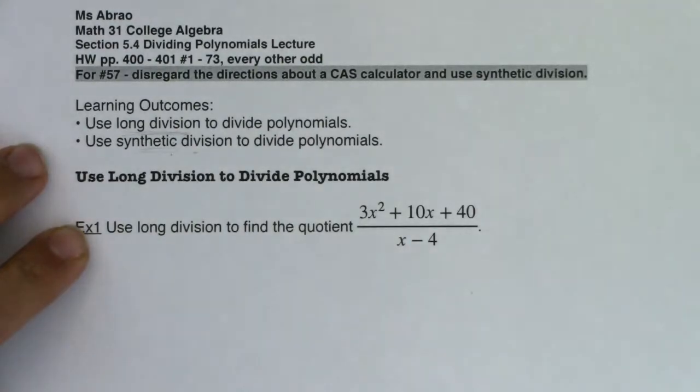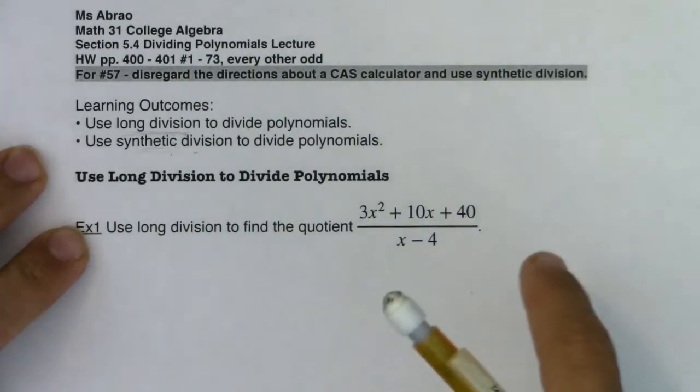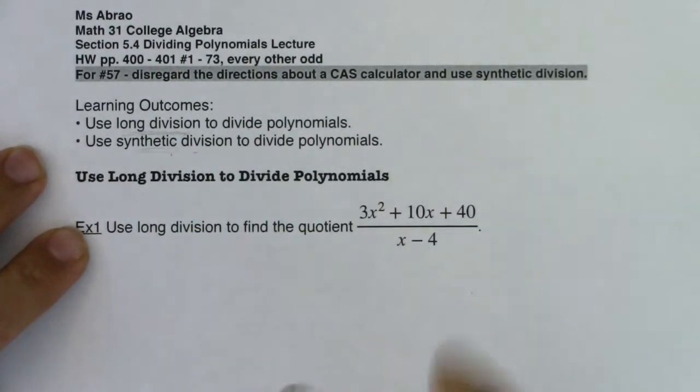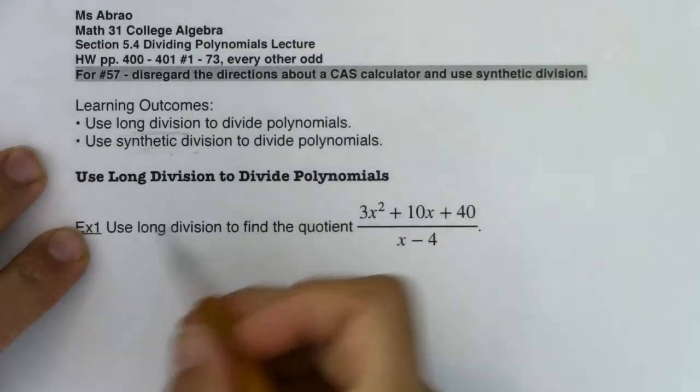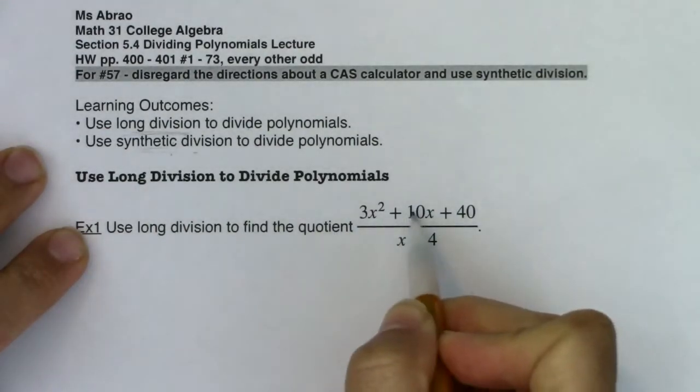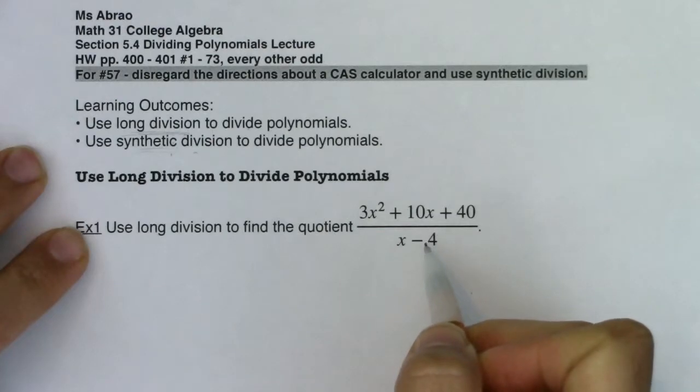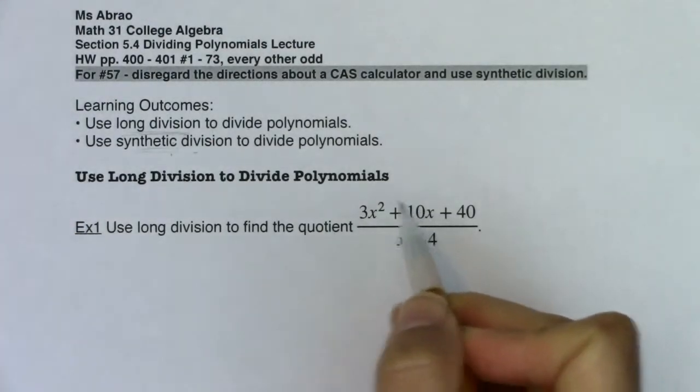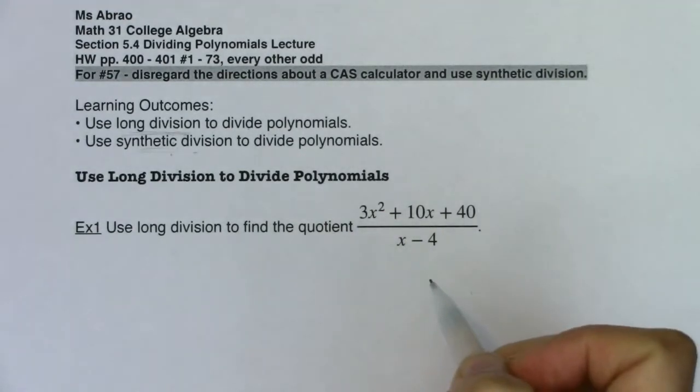We'll do a couple of examples with long division. And then we're going to rework these same functions with synthetic division. So it says, use long division to find the quotient 3x squared plus 10x plus 40 in ratio to x minus 4. And eventually, when we tack a little f of x equals onto this, we're going to be graphing this rational function.